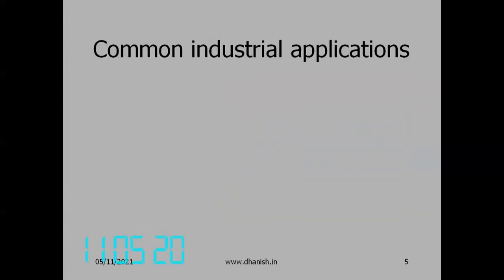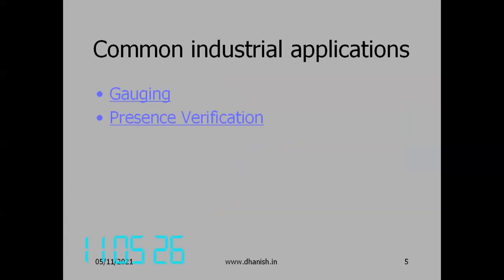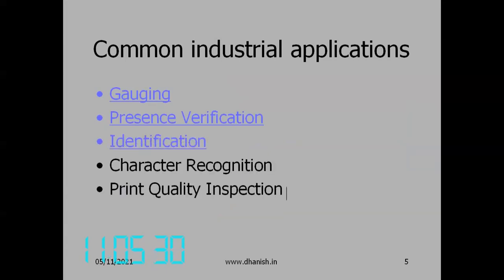Now we come to the forms of industrial applications. You can divide them into: gauging, presence verification, identification, character recognition, and print quality inspection. This is the classification by application domain.